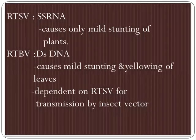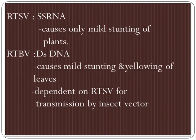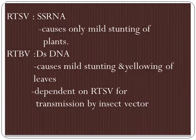RTSP basically contains single-stranded RNA and this also causes only mild stunting of plants. Whereas RTBV, this is double-stranded DNA, and this causes mild stunting and yellowing of leaves.